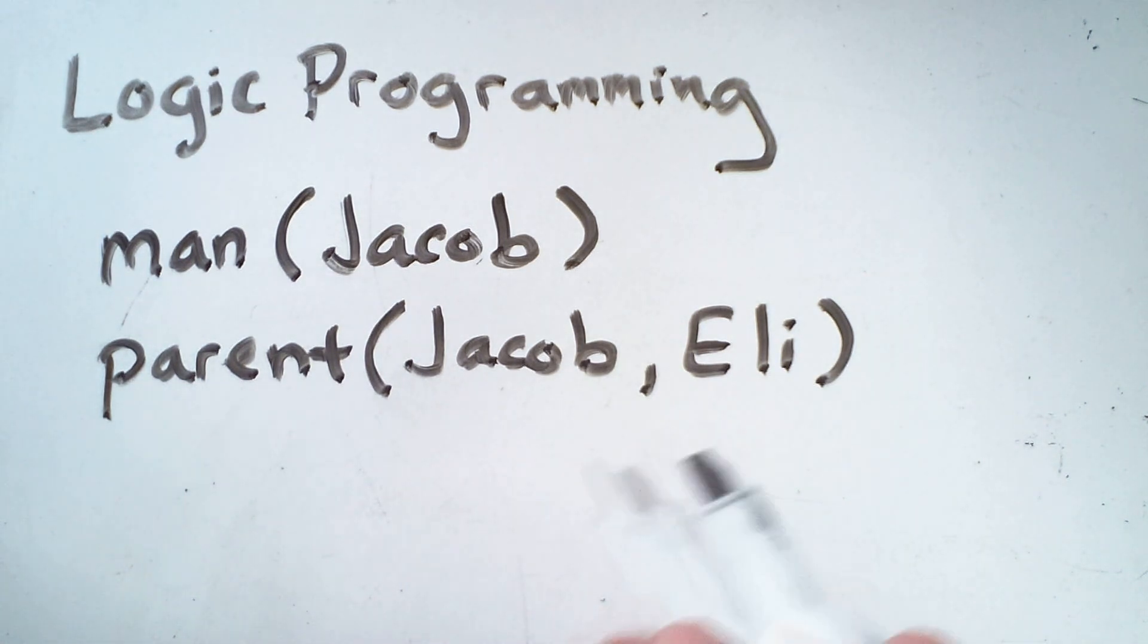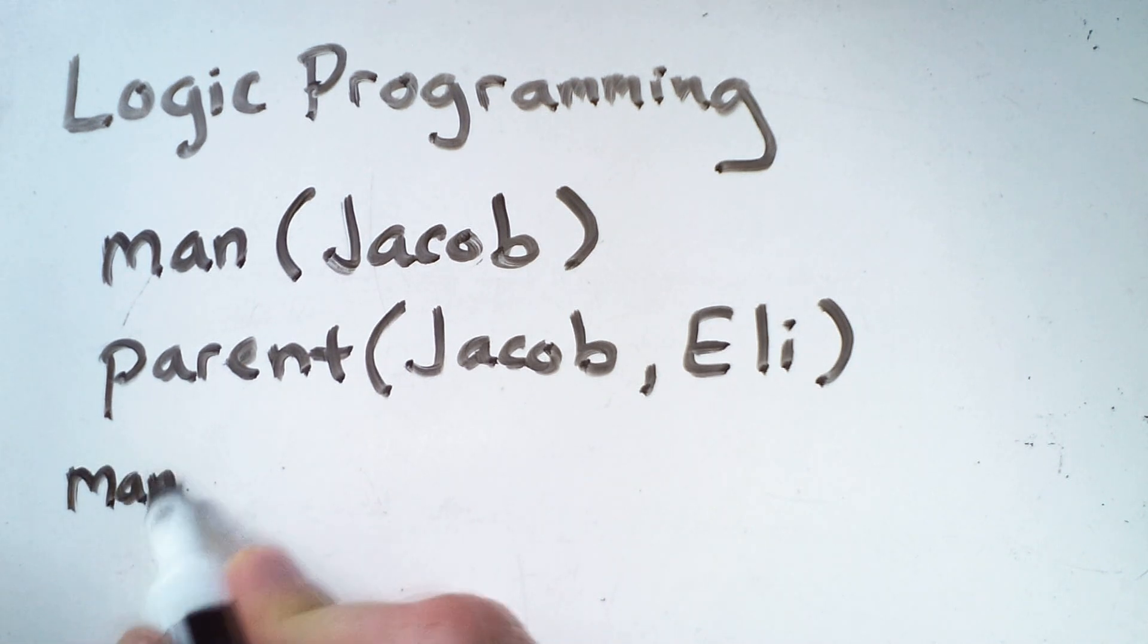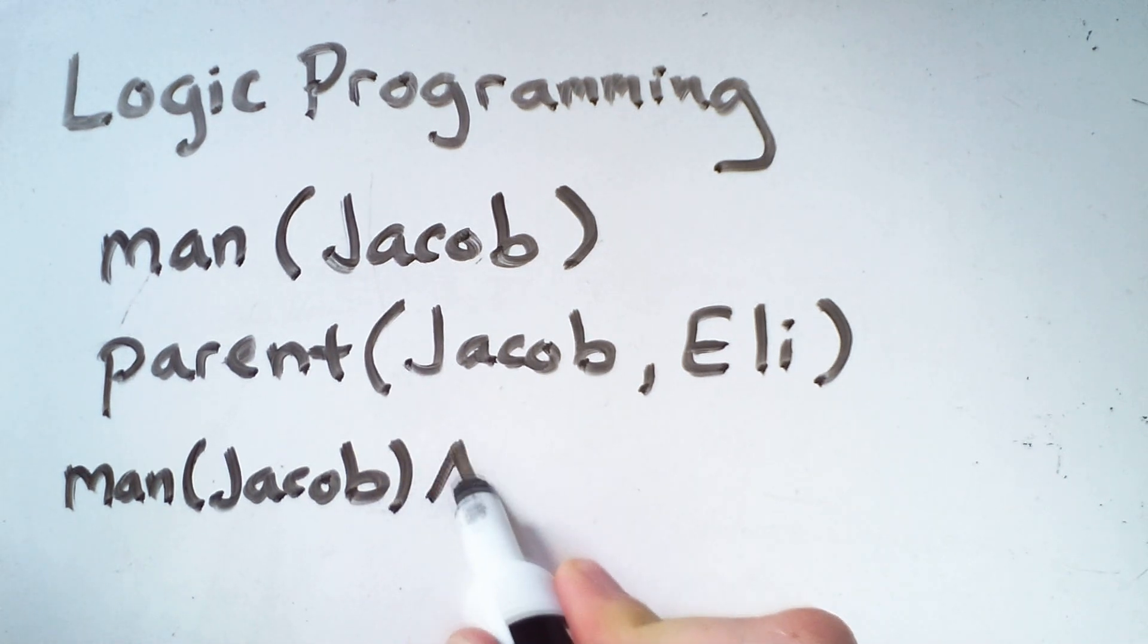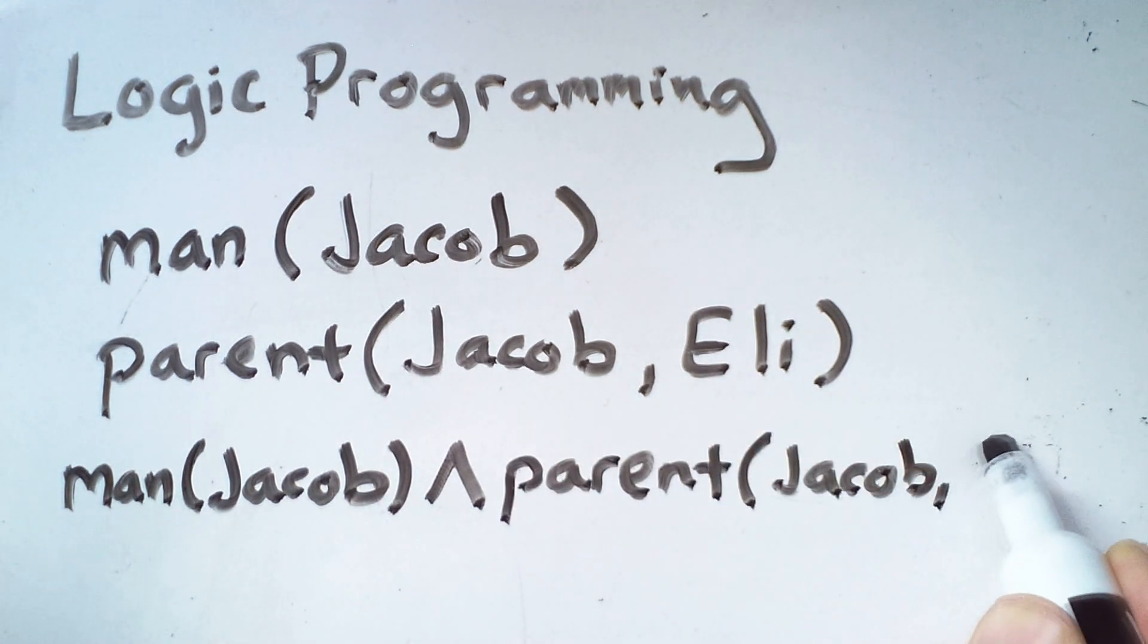Now, in typical symbolic logic, we could combine this information to derive new facts. For example, I could say that man Jacob, and then I'm going to use a symbol which means and. So this little upward notch is logical and. So Jacob, man, and parent Jacob, Eli.